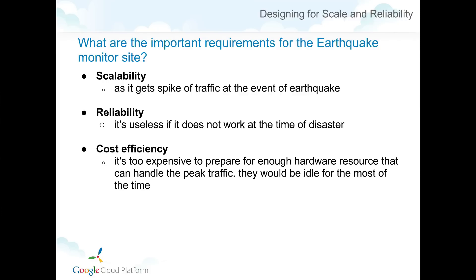The important requirements for this app can be summarized as scalability, reliability, and cost efficiency. Scalability is needed because the site will get a traffic spike during an earthquake. Reliability is critical because people will use the site only when a disaster occurs — if it's down during the disaster, it doesn't mean anything. And cost efficiency matters because if you prepare all the hardware resources for peak scalability, that hardware will be idle almost all the time.